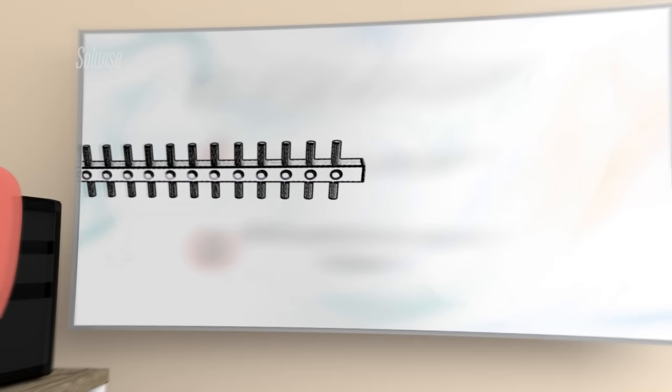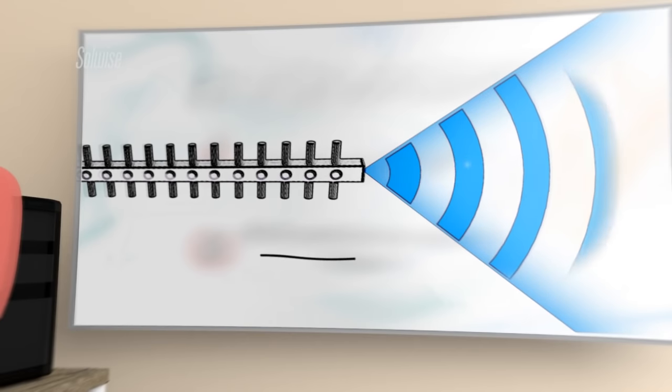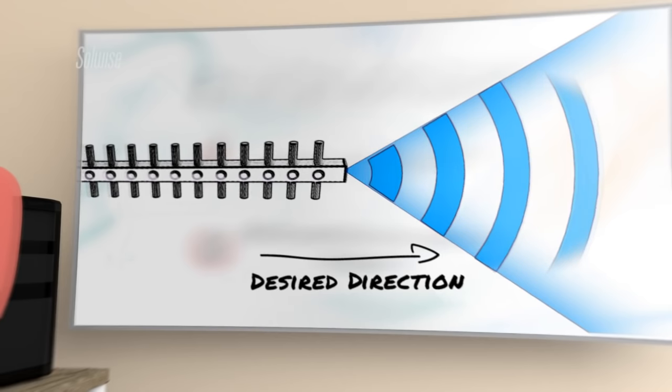An antenna generates gain by focusing signal that would otherwise radiate in unwanted directions towards the desired direction. As the gain increases, the beam gets stronger and narrower.